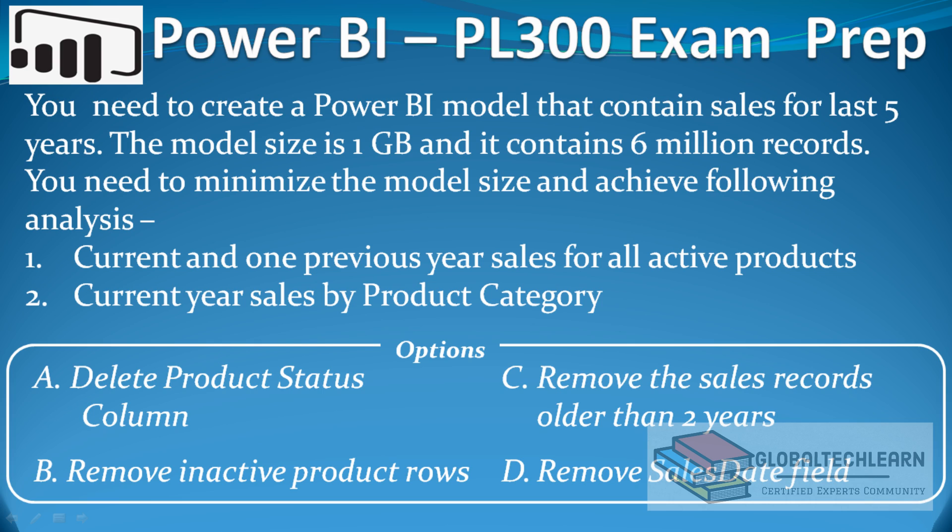We have to achieve two analyses from the model. The first analysis is current and one previous year sales for all active products, and the second is current year sales by product category. We need to determine what steps to take to minimize the model size without affecting these analyses.